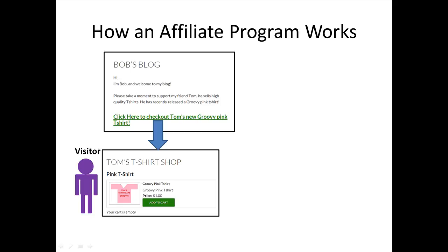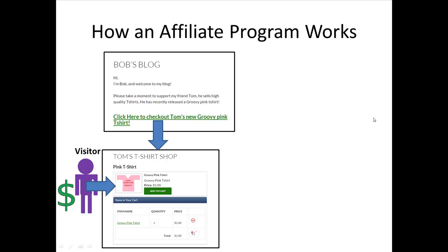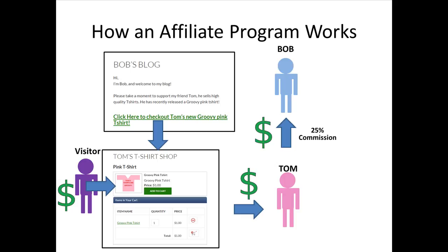The visitor decides they want one of these pink t-shirts — they're pretty groovy. So they click on the add to cart button, the shopping cart is displayed, they make a purchase, and Tom receives a sale. The visitor visited Bob's blog, clicked on the affiliate link, which directed them to Tom's t-shirt shop, and made a purchase. Because this visitor made a purchase after being directed from Bob's blog — the affiliate — Tom gives 25% commission to Bob.